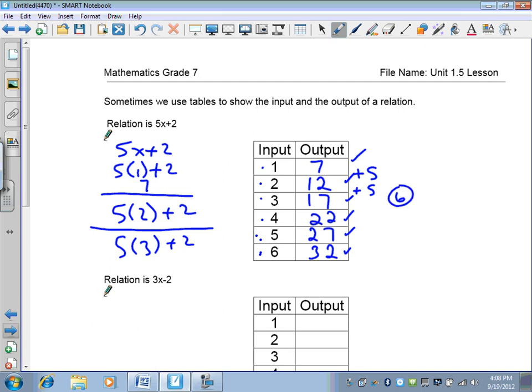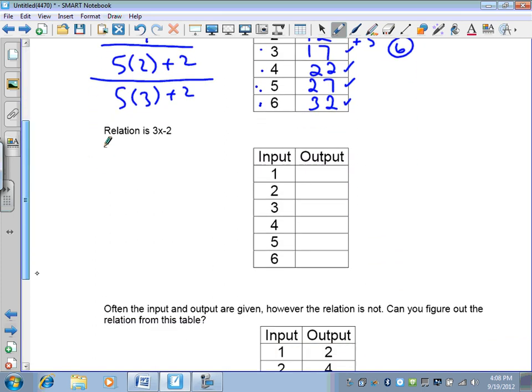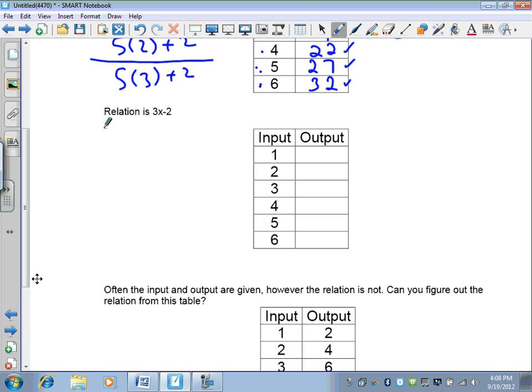Okay. The next one I want you to do, pause the recording, and I want you to put in the outputs when your inputs are 1, 2, 3, 4, 5, 6, using the relation 3x-2. So pause the recording and do this example.